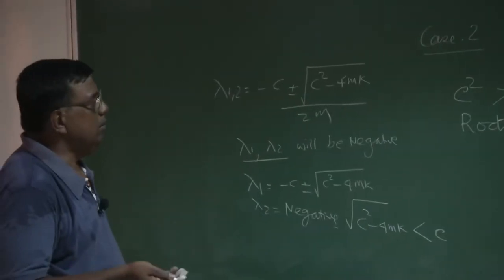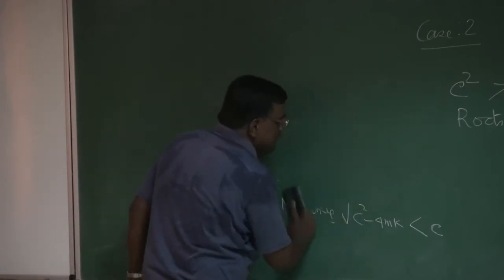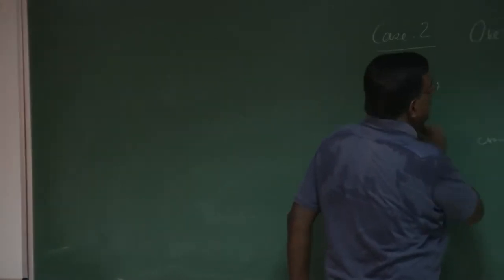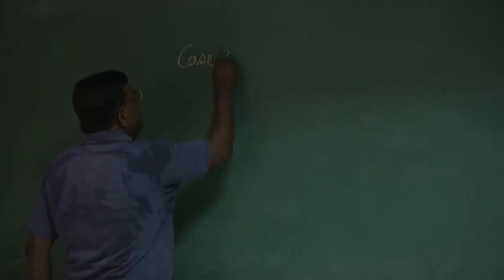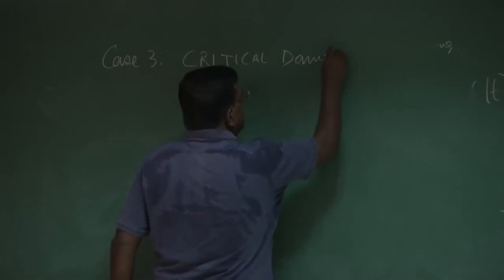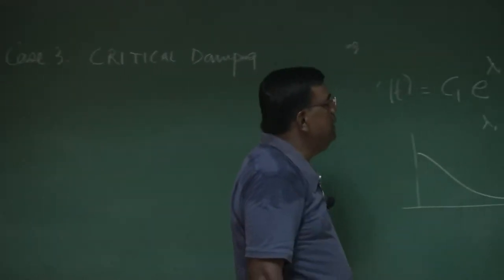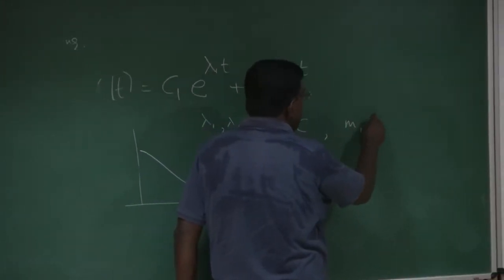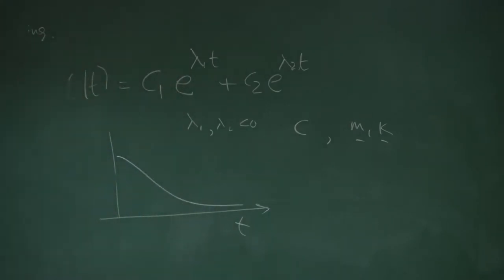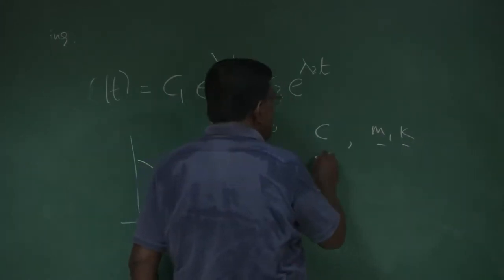Now, over-damping is just done. What comes to mind next is obvious: you will be more interested in the boundary between under-damping and over-damping, and that is case 3 — critical damping. Before coming to this, let me take you back to the physical situation. We realize you have to select the value of c, m, and k to ensure or to get whatever you desire — an oscillatory response or an over-damped response.